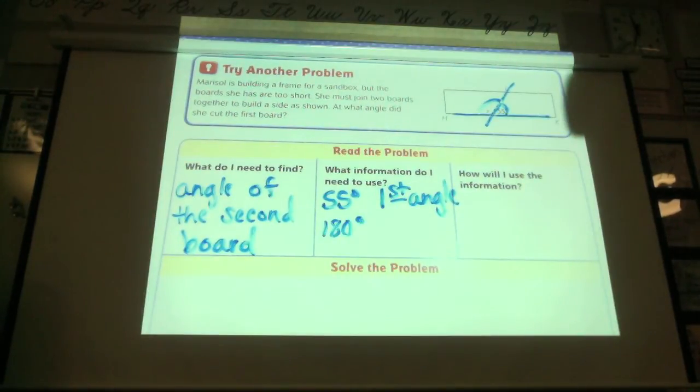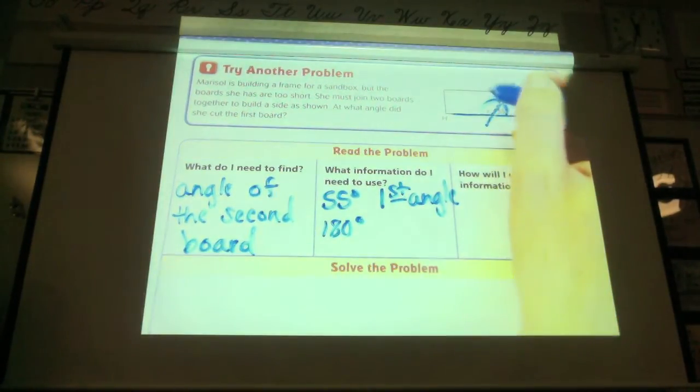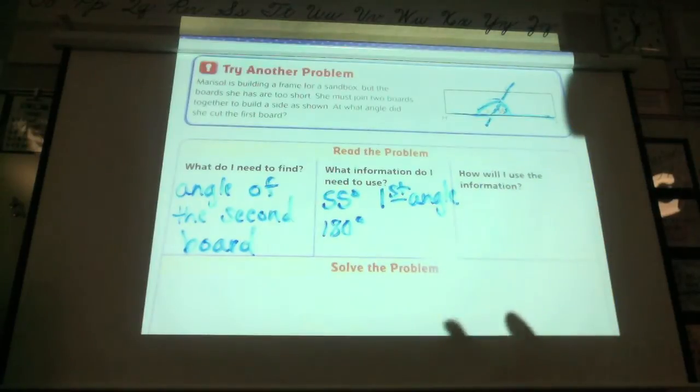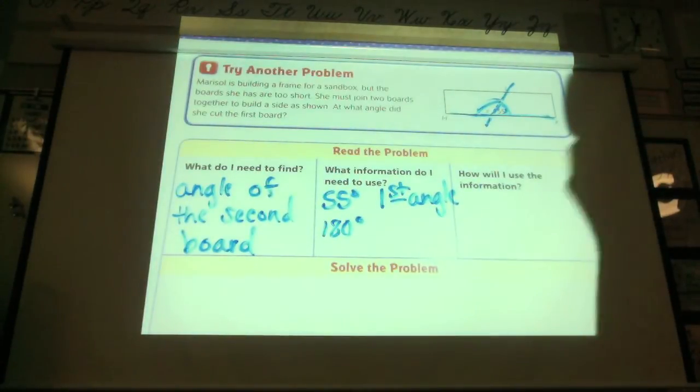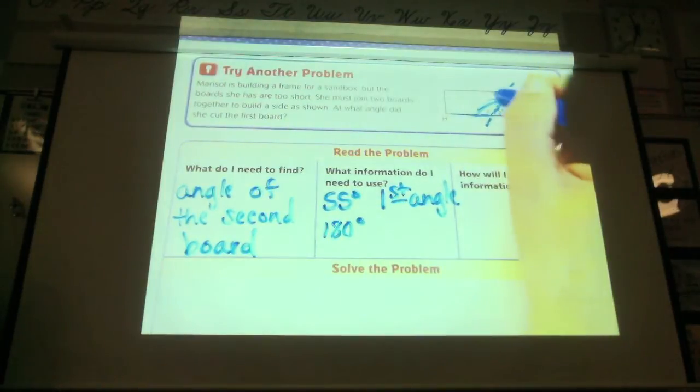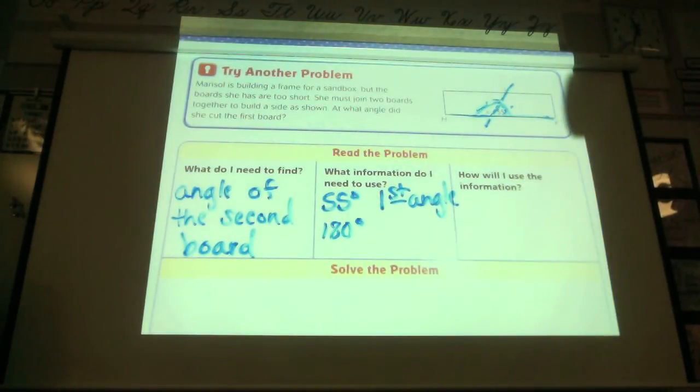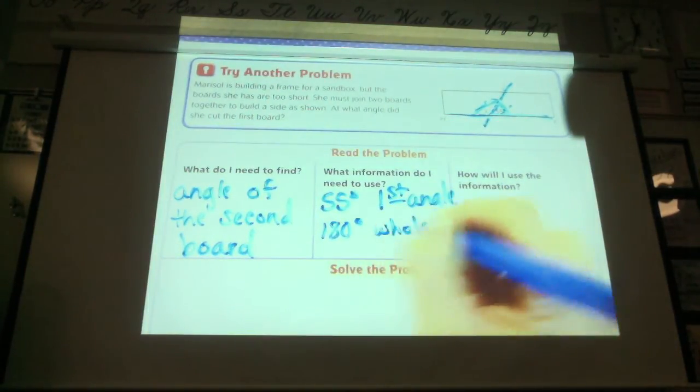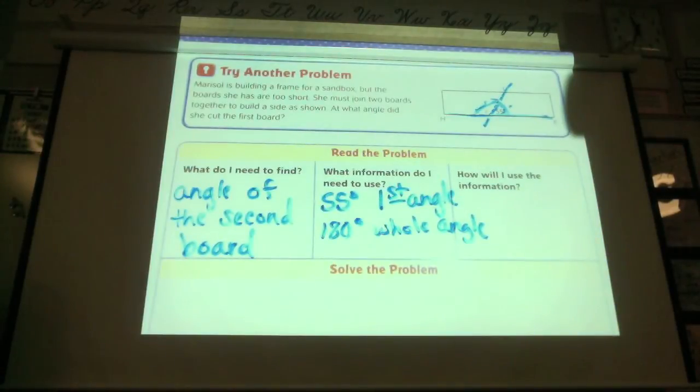Does anybody know where Jalen got 180 from? So, it's a half circle, and a half circle is 180. A straight line makes two angles, a straight line is 180 degrees. So, this number plus this number has to equal 180. Okay? So, we have 180 as the whole angle, and 55 as the first angle.